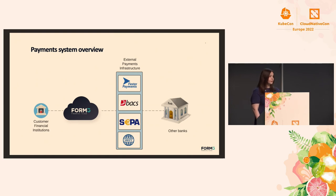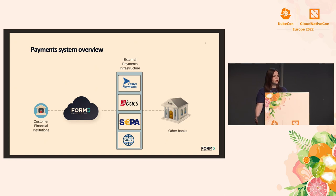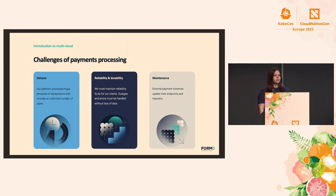Form 3 sits between our customers, which are financial institutions, and the external payments infrastructure that powers interbank transactions. Banks don't directly integrate with each other — that would be a maintenance nightmare. Instead, when they process payments between banks, they go through external payments infrastructure that defines the standards for interbank transactions. We make our customers' lives easier because we take care of all of the securing of actual payments processing, and then they integrate with our APIs.